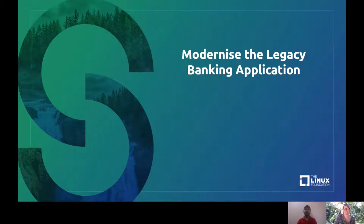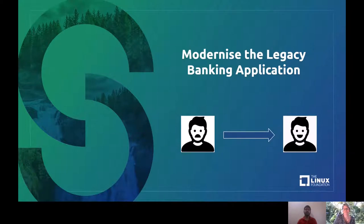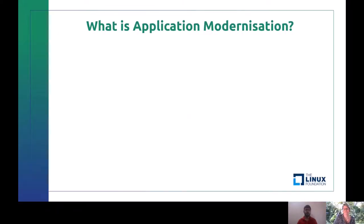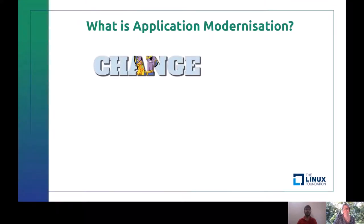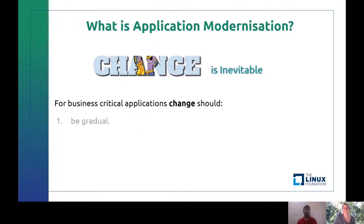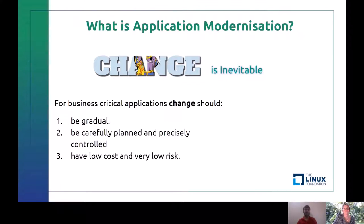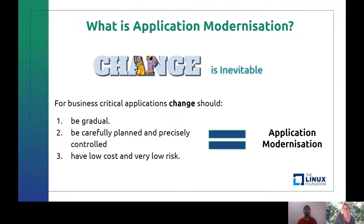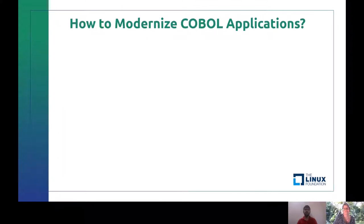The first task was modernizing the legacy banking application — this was the bulk of the project. When a business modernizes a legacy application, the goal is to make a sad customer into a happy customer. But first, what is application modernization? It is change — because change is inevitable. But for business-critical applications, change should be gradual, carefully planned and precisely controlled, with very low cost and very low risk. This kind of change is what we call application modernization.